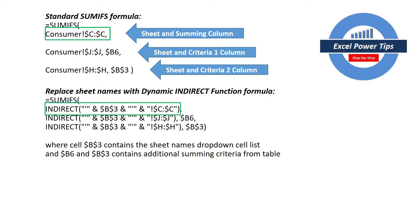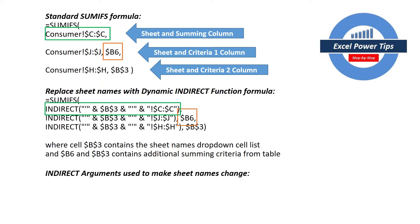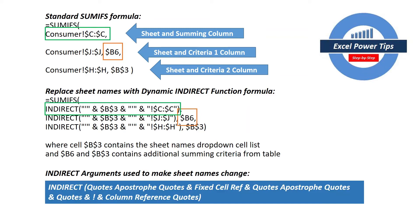The consumer name is replaced with the INDIRECT function. The cell references for the criteria remain the same. The INDIRECT arguments used to make sheet name changes will be: INDIRECT, then quotes, apostrophe, quotes, then the fixed cell reference, then quotes, apostrophe, quotes, then the exclamation mark, and then the column reference in quotes.